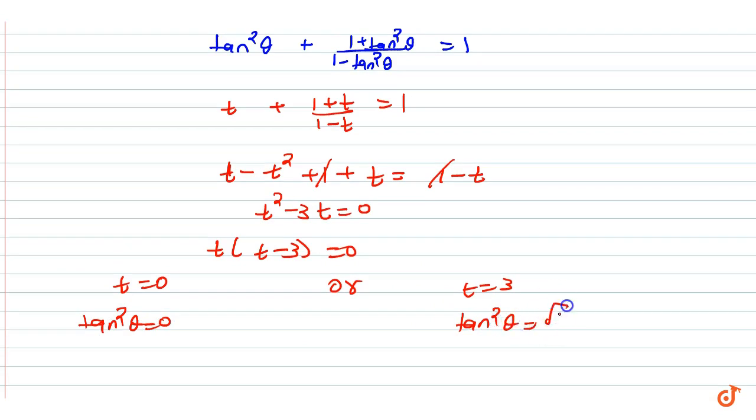So here tan theta equal to 0, then theta equal to n pi. Here a solution theta equal to n pi. Direct, it will be easy to get.